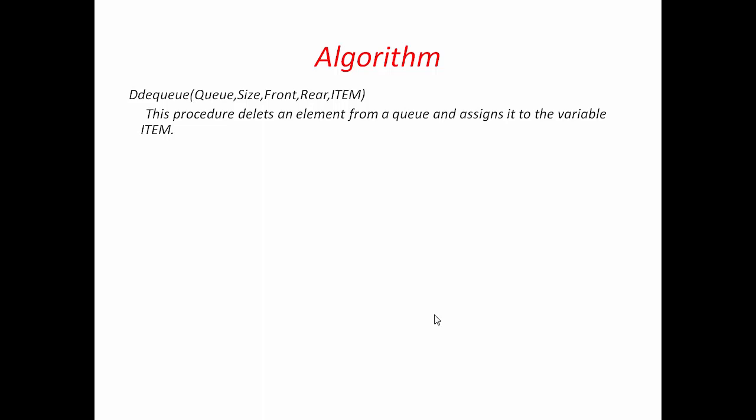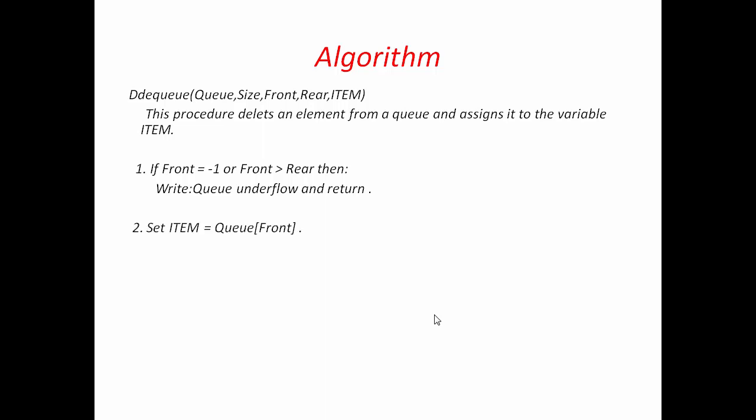Next we will write the algorithm for dequeue operation. This procedure deletes an element from a queue and assigns it to the variable item. If the queue is empty, deletion is not possible, so first we need to check if the queue is empty or not. For that, I am going to write the condition: if Front equals minus 1, or Front is greater than Rear. If one of these conditions is true, then we write queue underflow and return. If the queue is not empty, we delete the Front element — that is, item equal to Queue[Front]. Then we increment Front by 1, that is Front equal to Front plus 1. After this, we write a special condition: if Front is greater than Rear, that means the queue is empty, so we set Front and Rear equal to minus 1, and then return.